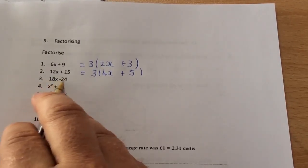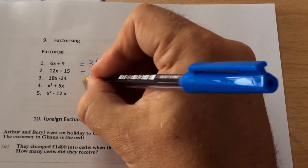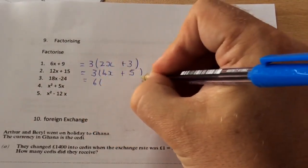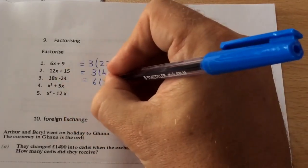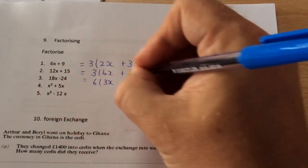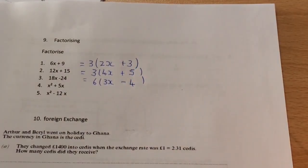The next one, what's the highest number that goes into 18 and 24? And the answer is 6. So how many 6's in 18x? 3x. How many 6's in 24? 4.